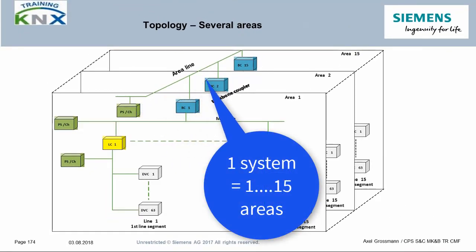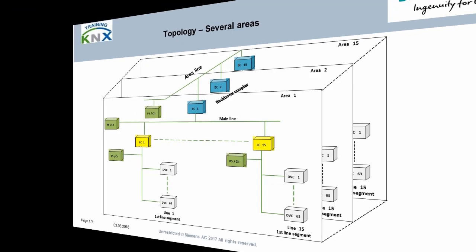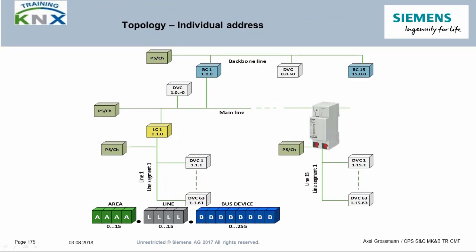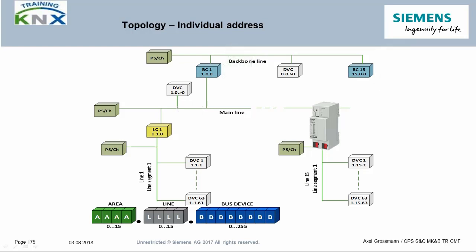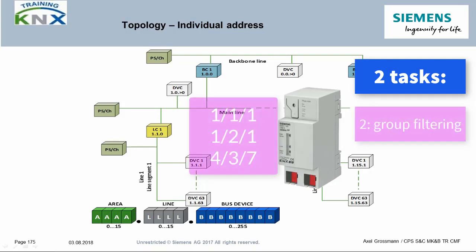A total of 15 areas can be created. Exactly the same conditions apply to each area as previously explained. Area couplers are used to connect the areas with each other — they connect logically and isolate electrically. As already heard in the topology chapter, all couplers are identical in terms of hardware; the distinction is made via the physical address. Couplers have two different filter tasks: they filter bus telegrams whose target address is physical by comparing them with their own physical address, and they filter bus telegrams whose target address is a group address by comparing them with a filter table stored in them.